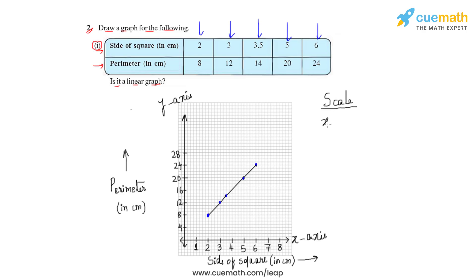Whenever we are drawing a line graph, we have to give the scale of both axes. If we observe the x-axis, we see that we have taken four units to represent one centimeter on the x-axis, so the scale of the x-axis is four units corresponding to one centimeter.